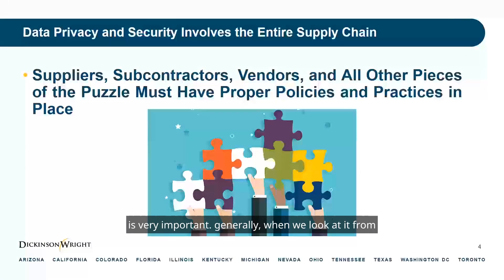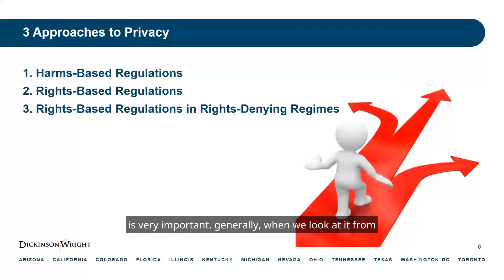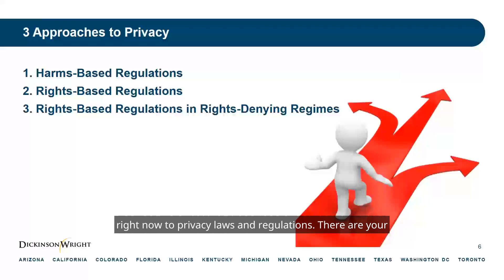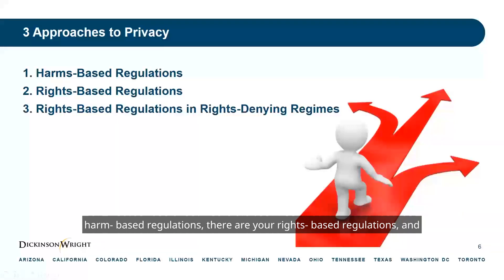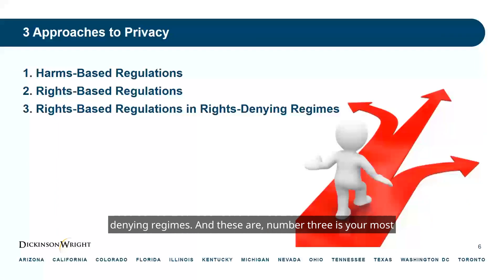That is very important. Generally, when we look at it from a bird's-eye view, there are three approaches that we see right now to privacy laws and regulations: harm-based regulations, rights-based regulations, and rights-based regulations in rights-denying regimes.